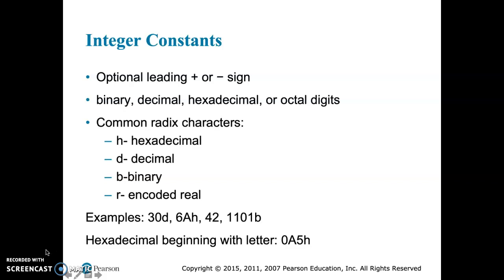6Ah is a hexadecimal integer. 42, since it has no radix, is actually a decimal. So a decimal is assumed if the radix isn't specified. And then finally, 1101B would obviously be binary.